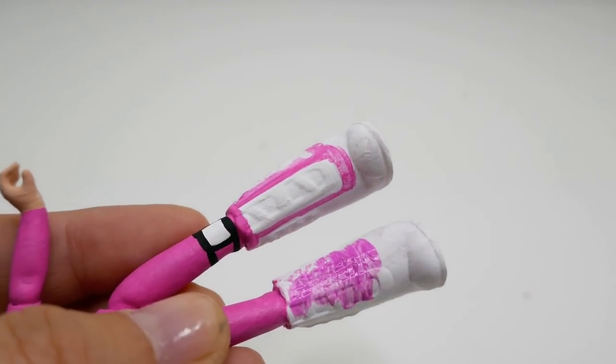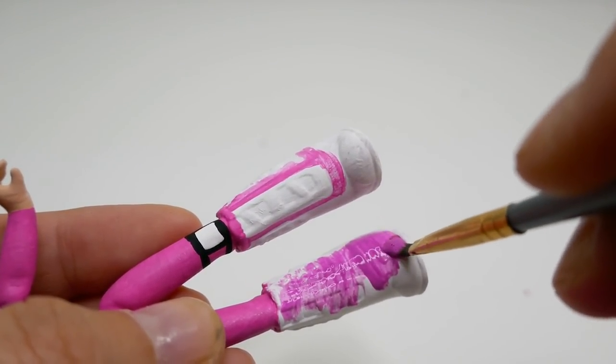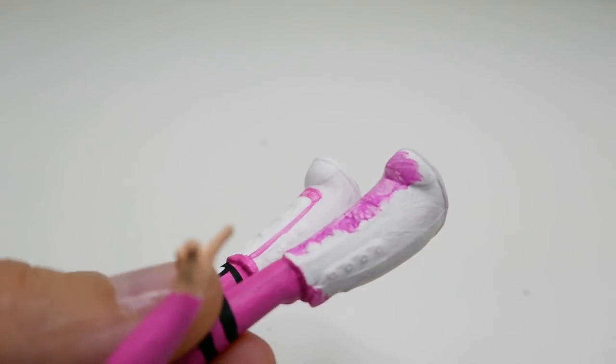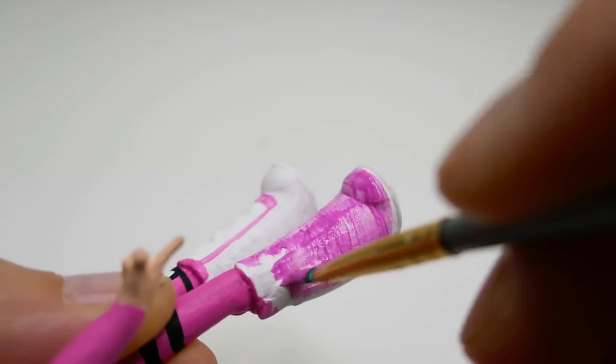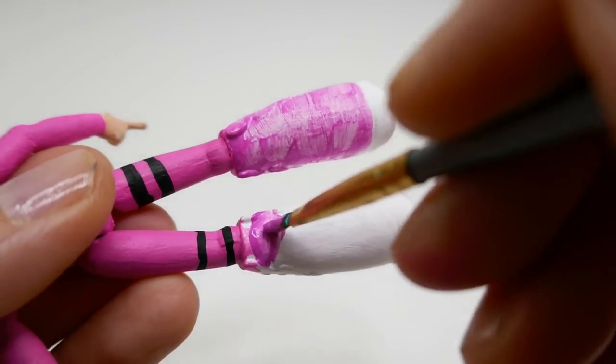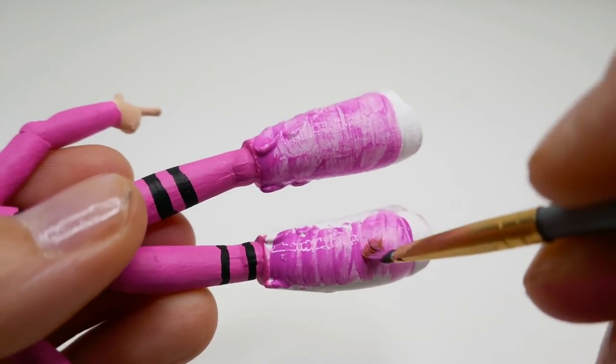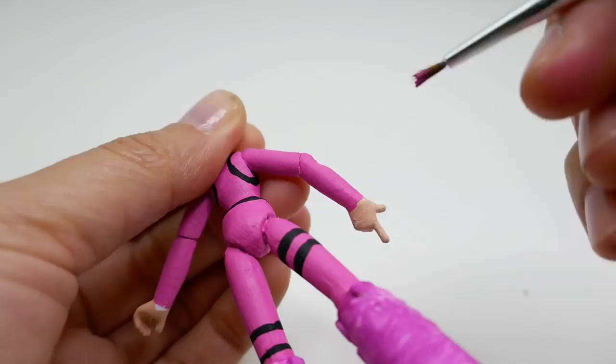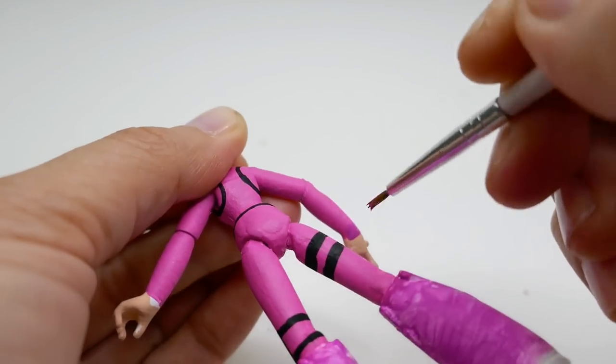Finally, we're down to the boots. We're going to paint it a purple color. With the same purple, we're going to paint her gloves on her hands.